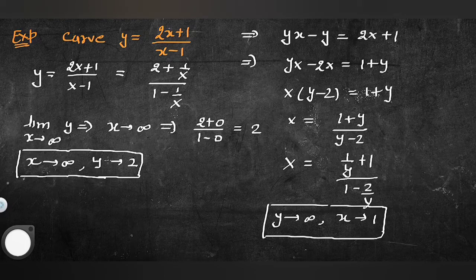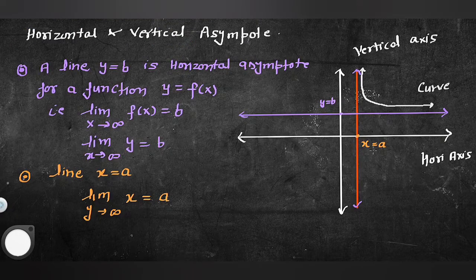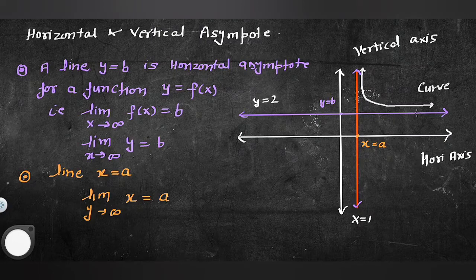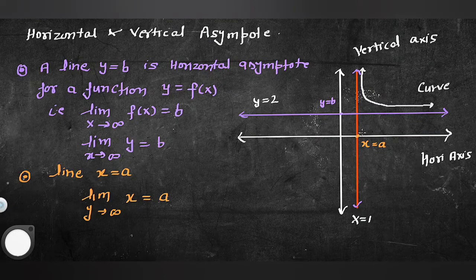Curve draw کرنے کے لیے: x→∞ پر y = 2 — یعنی y = 2 straight line asymptote ہے۔ اور y→∞ پر x = 1 — یعنی x = 1 straight line asymptote ہے۔ Curve کیسے بنے گا وہ ایک الگ method ہے جو curve tracing lecture میں بتایا جائے گا۔